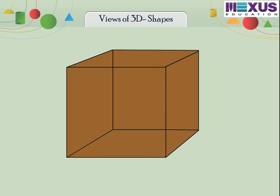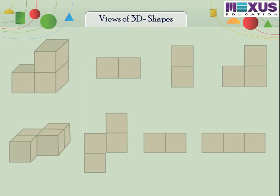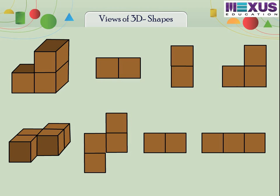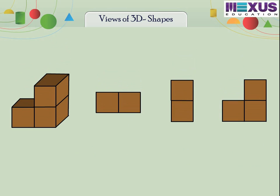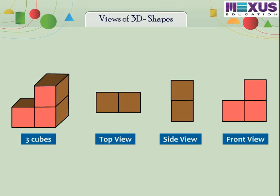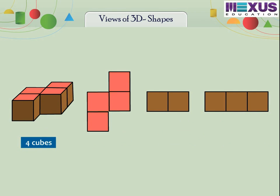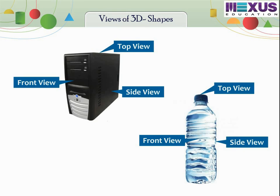Observe the solid shapes which are formed by arranging some units of cubes. It looks different from different positions, but the object is the same. First, let us see different views of solids made of three cubes. Its top view, side view, and front view. Now let's see solid shapes made of four cubes. Let us see the front view, side view, and top view of some more objects.